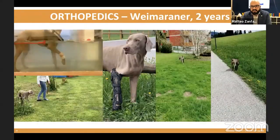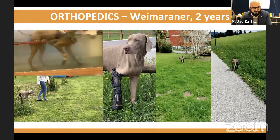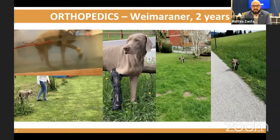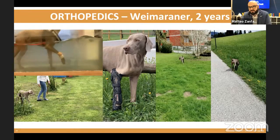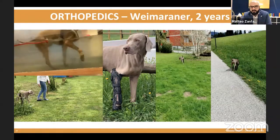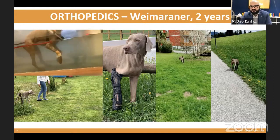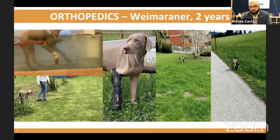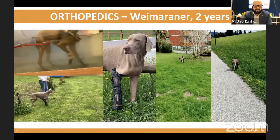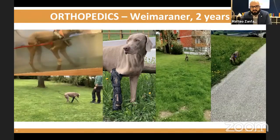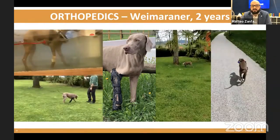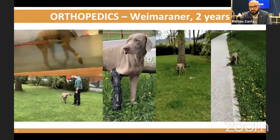Another orthopedic case involving limb management was a Weimaraner with a bad car accident. The solution was designed similarly to the first case — it was important to protect the limb in order to let the owner manage the dog's gait correctly on normal surfaces. This is the result. The plexus lesion was complete, so it wasn't designed for a correct gait because that was impossible — this was purely a protective device.